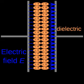The electric susceptibility chi-e of a dielectric material is a measure of how easily it polarizes in response to an electric field. This determines the electric permittivity of the material and influences many other phenomena, from the capacitance of capacitors to the speed of light. It is defined as the constant of proportionality relating an electric field E to the induced dielectric polarization density P.